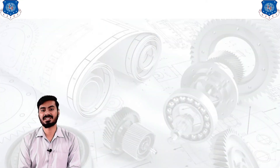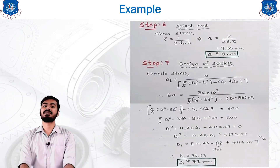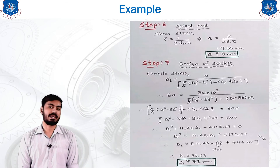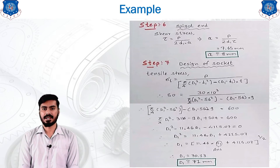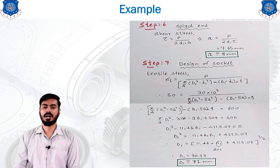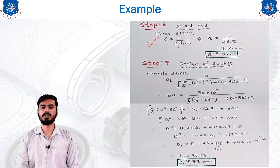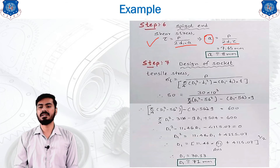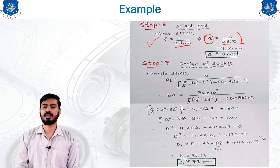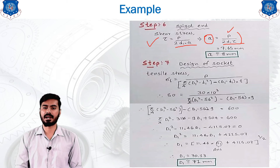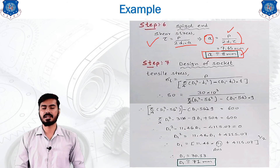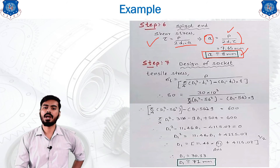Step 6 is the spigot end design, calculating dimension a. The shear stress equation used is τ = P / (2 · d1 · a). Making a the subject: a = P / (2 · d1 · τ). Substituting all parameters gives a = 8 mm. This is the distance between the slot and the rod end.